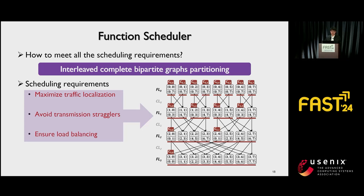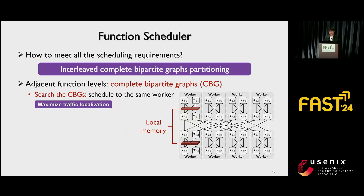For the function scheduler, the key challenge is how to meet all scheduling requirements: maximize traffic localization, avoid transmission stragglers, and ensure load balancing. We propose interleaved complete bipartite graph (CBG) partitioning to address this challenge. Our design is based on the observation that adjacent function levels in the network can be partitioned into isolated complete bipartite graphs. We search the CBGs in the network and schedule functions in a CBG to the same worker for traffic localization. Because the CBG is the subgraph with the largest edge density, it can maximize traffic localization.